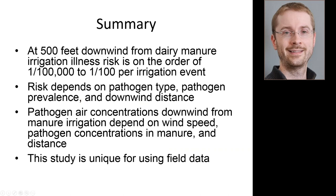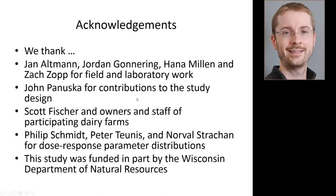In summary, at 500 feet downwind from dairy manure irrigation, the illness risk is on the order of 1 in 100,000 to 1 in 100 per irrigation event. There is a distance effect — risk decreases with distance. The risk depends on pathogen type, pathogen prevalence from farm to farm, and distance from the wetted perimeter. Pathogen concentrations downwind depend on wind speed, manure concentrations, and distance — and this is unique for being based on field data.